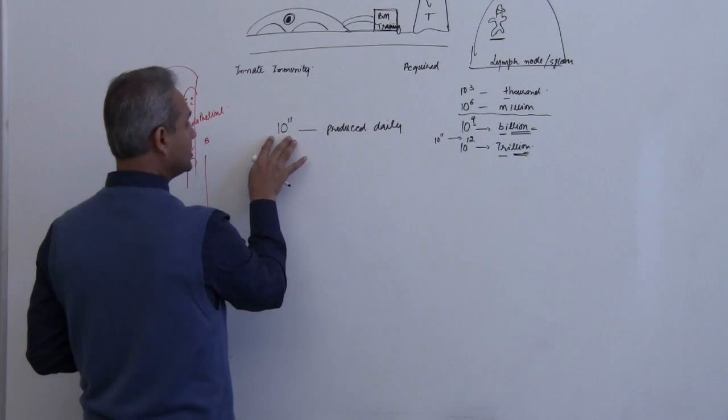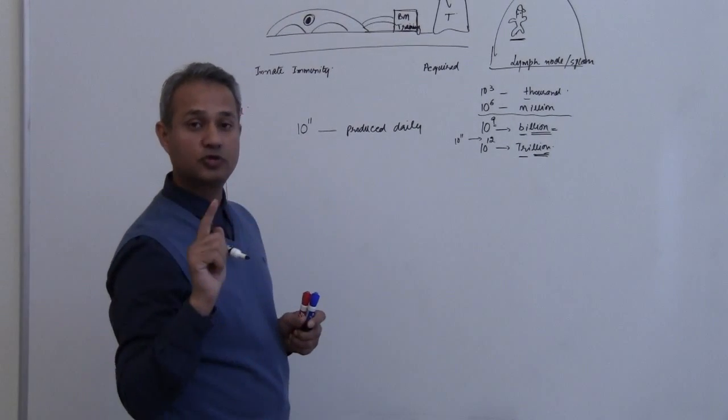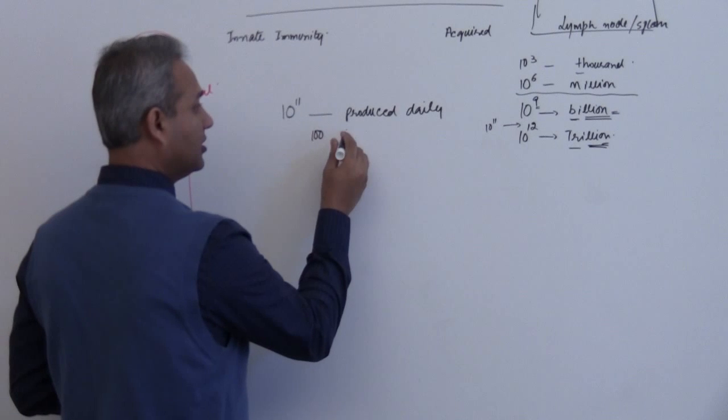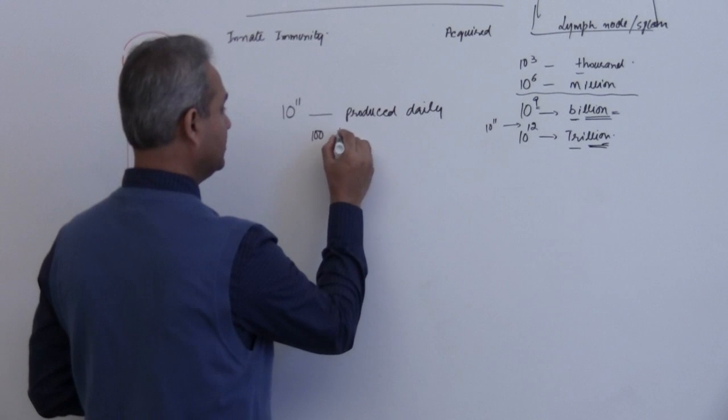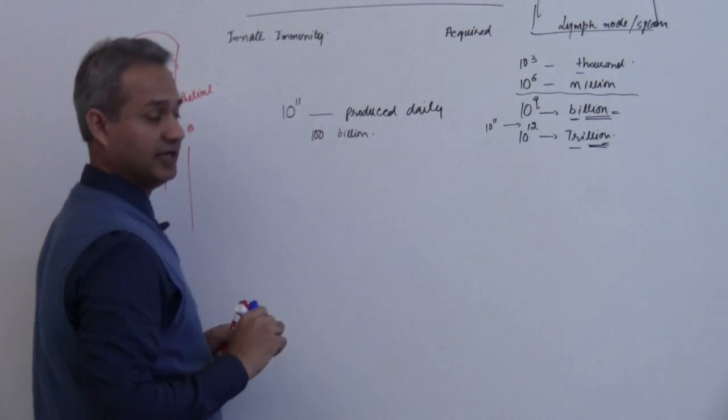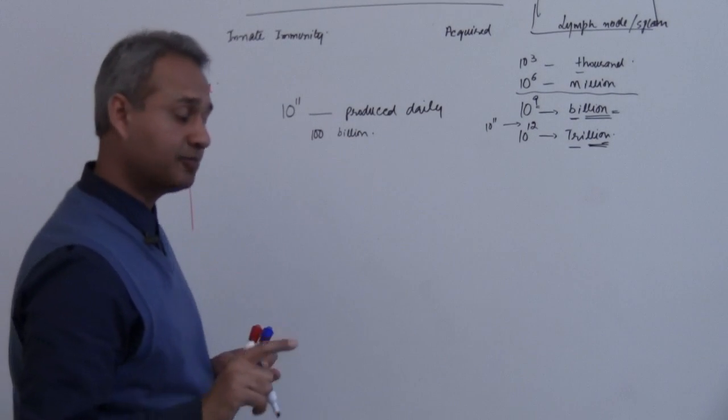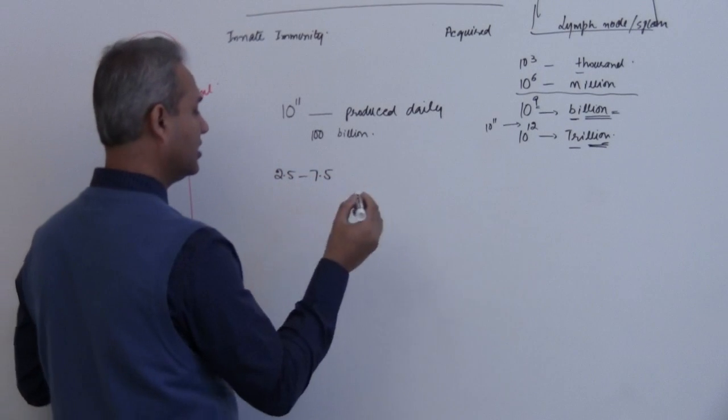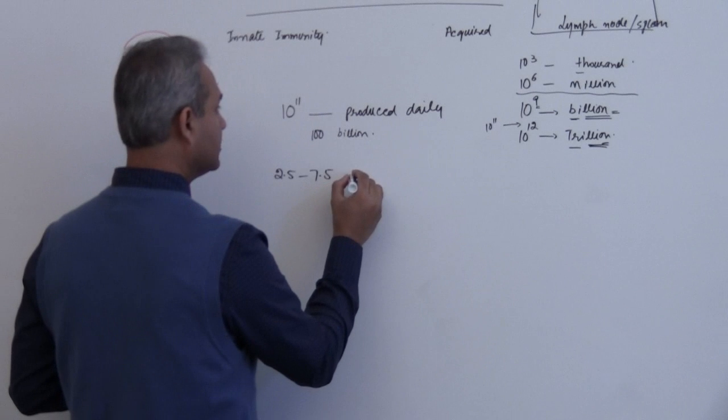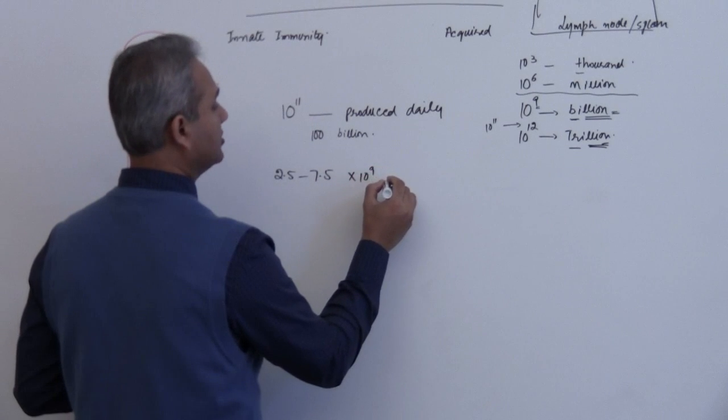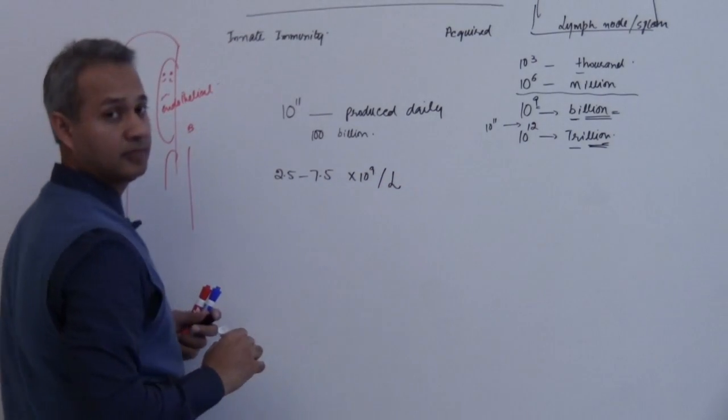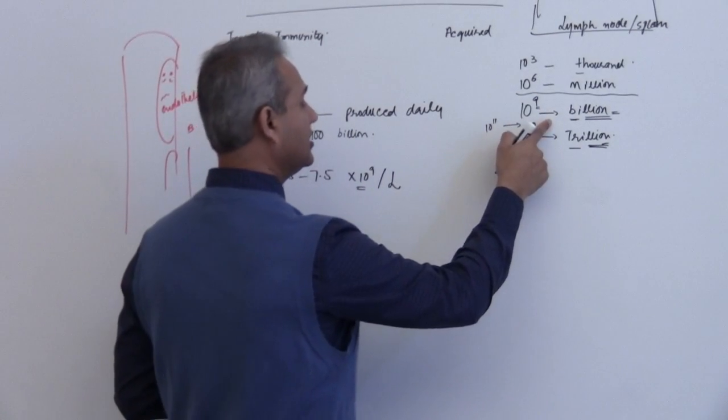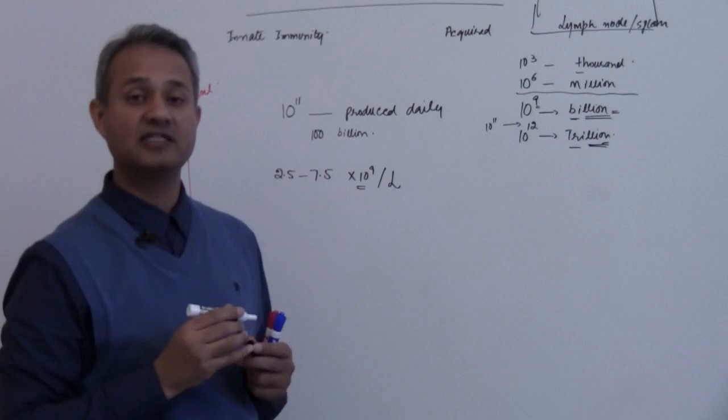So here we produce 10 raised to power 11 neutrophils per day—that means 100 billion neutrophils per day. Now how many neutrophils are present in our blood? Various books say differently, but 2.5 to 7.5 multiplied by 10 raised to power 9 per liter. 10 raised to power 9 means billion, so 2.5 to 7.5 billion per liter.